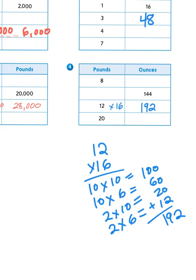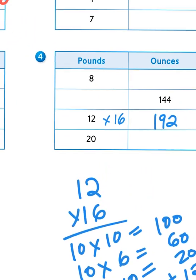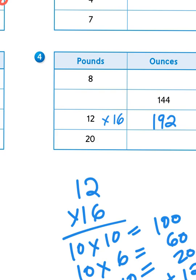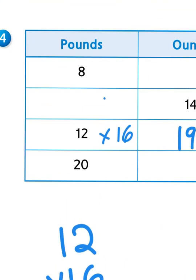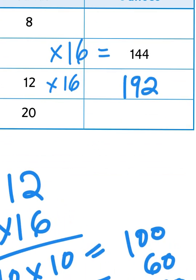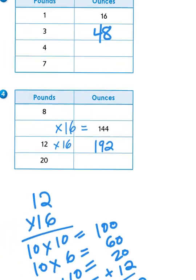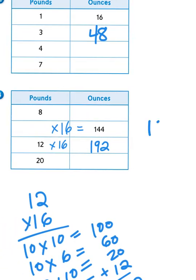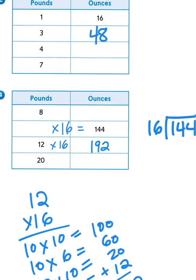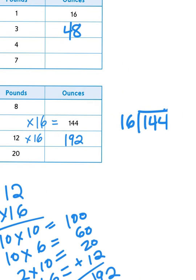Sometimes we have to group smaller units into larger units, like how many pounds is the equivalent of 144 ounces. Well, if the conversion rate between pounds and ounces is that I have to multiply my pounds by 16 to figure out my number of ounces, I would then have to reverse that to figure out the number of pounds. So basically I would be dividing 144 by 16. A two-digit divisor. Well friends, that's not as scary as you think it might be.